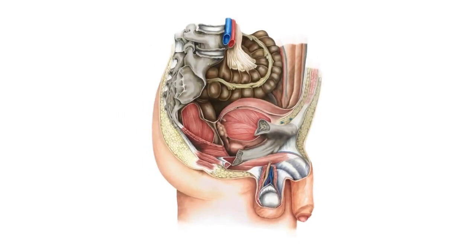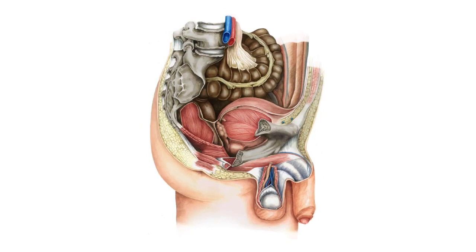What I'm going to be doing is basically looking at this image that you see now popping on your screen, which is a parasagittal section of the male pelvis and perineum, looking at it from a right view. We're going to be describing the different structures that you see here — different bones, different ligaments, some muscles, and the organs, the viscera that we find here.